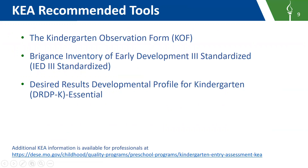There are currently three KEA tools recommended by the DESE Office of Childhood: the Kindergarten Observation Form (KOF), Brigance Inventory of Early Development III Standardized, and the Desired Results Developmental Profile for Kindergarten Essential (DRDPK). Recently updated KEA information is available on the KEA section of the Office of Childhood Quality Programs webpage, including recommended KEA tool documents with links to individual publisher websites and the KOF pilot program information currently underway in Missouri.